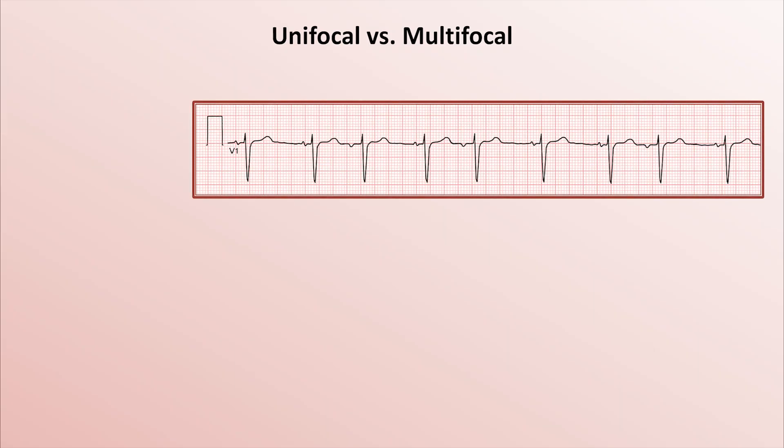How can we describe premature beats? The most basic descriptor is whether they are unifocal or multifocal. The assumption here is that waveforms — whether P-waves or QRS complexes — that have the same morphology originate in the same location within the myocardium. For example, when looking at this rhythm strip, we can identify three PACs. They all have the same morphology, meaning they all look the same, so they are probably originating in the same location within the atria. Thus, we call these unifocal PACs.